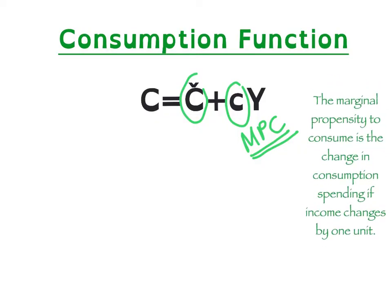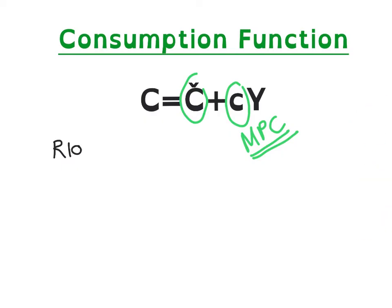The marginal propensity to consume is the change in consumption spending if income changes by one unit. In order to explain this, let's use a simple example. Suppose that you have 100 Rand. From this 100 Rand, you can only do two things: either save or spend.